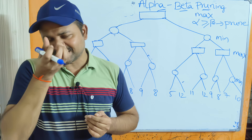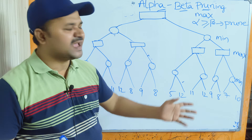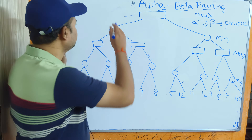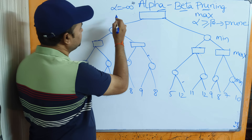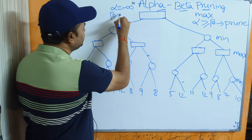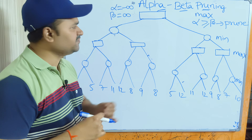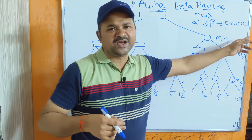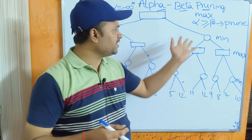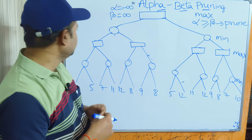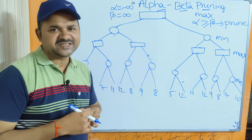At each node we use alpha and beta values. The initial value of alpha is minus infinity (the smallest value), and the initial value of beta is plus infinity (the largest value). We perform the pruning operation whenever alpha is greater than or equal to beta. Alpha-beta pruning uses depth-first search (DFS).